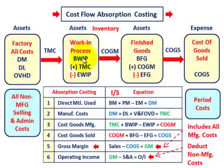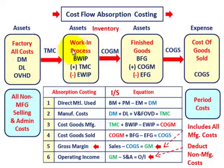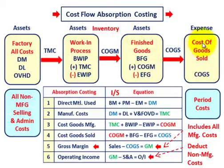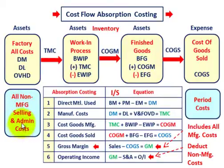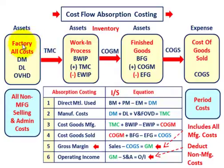Now let's look at the cost flow for absorption costing, and then we'll look at setting up our income statement. All those factory costs — direct materials, direct labor, and overhead both variable and fixed — are going to flow into work in process, then finished goods, which are all asset amounts in inventory. Those then flow into cost of goods sold at the end of the period based on sales and are expensed there. Non-manufacturing support functions — selling and administrative costs — are not included in inventory; they're expensed as period costs.